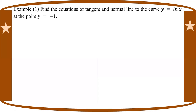Now let's take a look at y prime, the gradient. y equal to ln(x) — this is a differentiation. Differentiating ln(x) gives 1 over x in general. So y prime equals 1 over x.